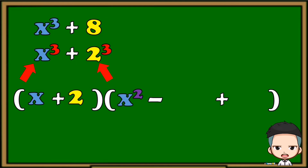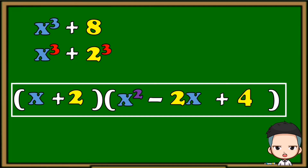Next, multiply the base of the first term and the base of the second term. Lastly, square the base of the second term — 2 squared equals 4. So the factored form of x³ + 8 is the quantity of (x + 2) multiplied by the quantity of (x² − 2x + 4).